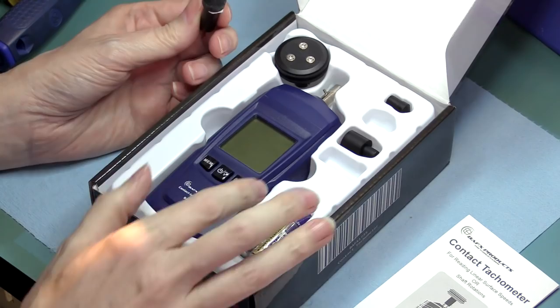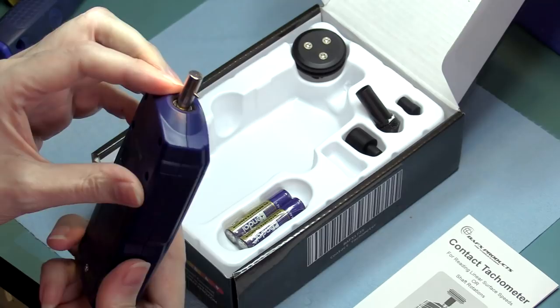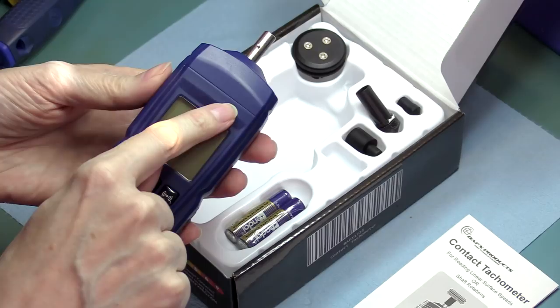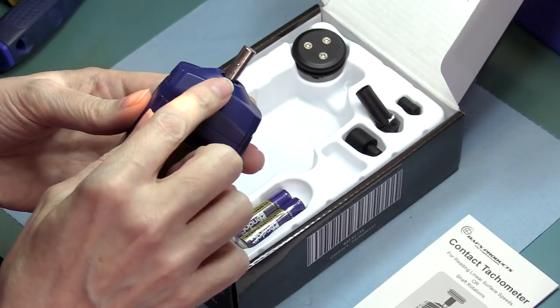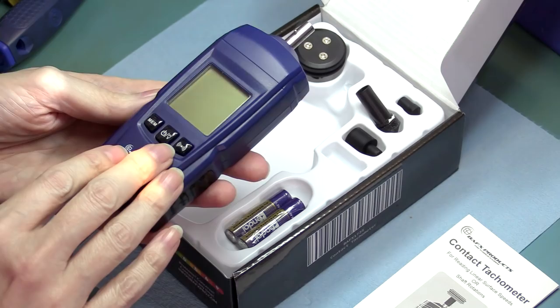And in a contact tachometer, as far as I could imagine, there's really only two critical components. There's a bearing which has to be smooth and sturdy for the shaft, and there has to be a decent opto encoder to read the motion of the shaft accurately. And the rest is just all processing.